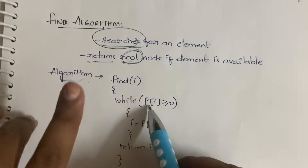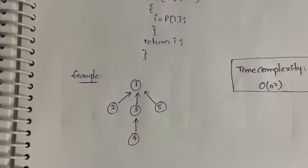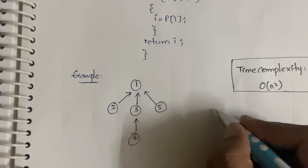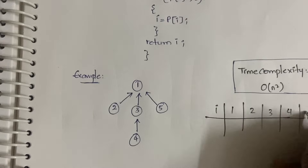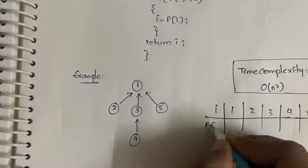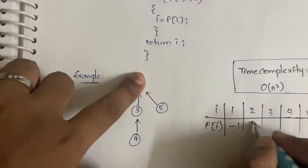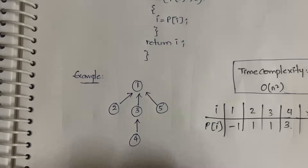Let me explain the find algorithm with an example first, so it's easier to understand. Consider elements one through five with p[i] values: p[1] = -1, p[2] = 1, p[3] = 1, p[4] = 3, p[5] = 1. We are trying to find element four.